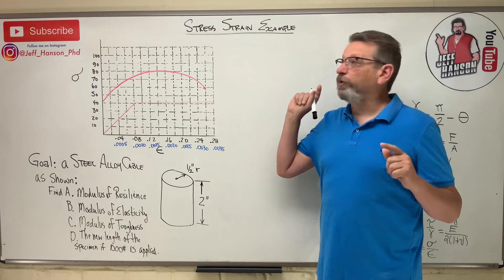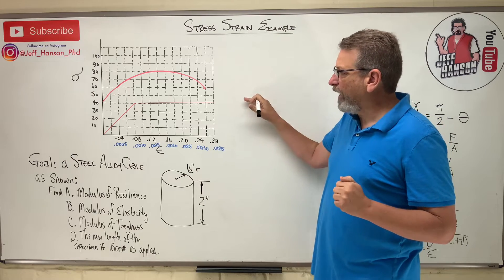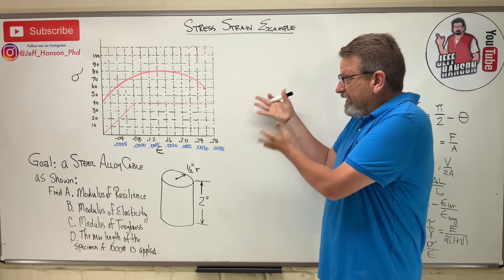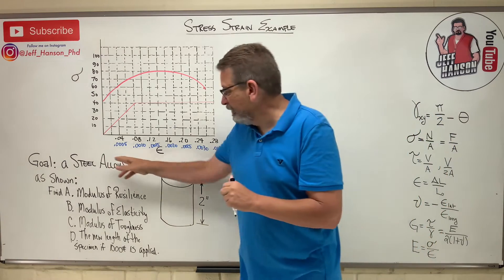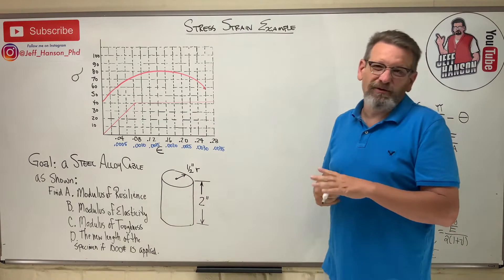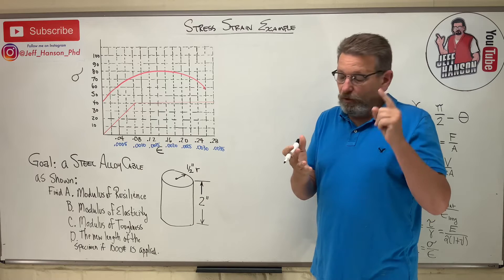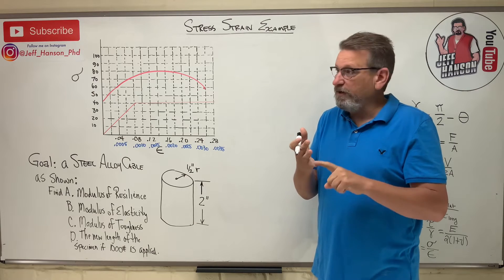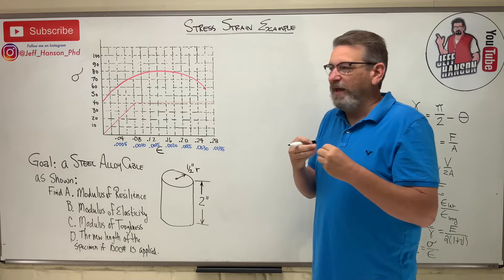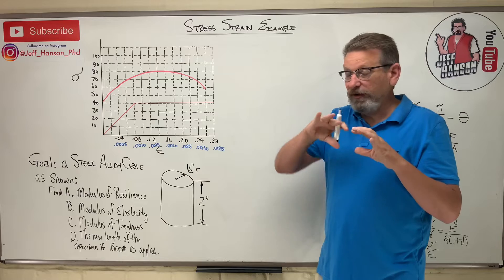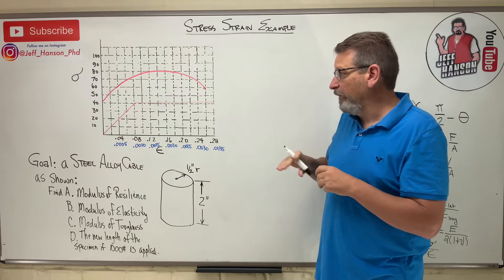Hey friends, another solids lesson. We're talking about the stress-strain diagram again and we're going to do an example problem that actually uses a stress-strain diagram for a given material. They say it's a steel alloy — that would be like when you add something like chrome or nickel to steel. If you add chrome you can get chromium steel, which is a lot harder than regular steel, or add nickel to get into stainless steel.